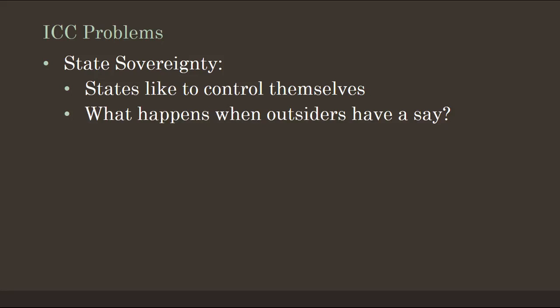State sovereignty is another issue. States like to control themselves — the concept of sovereignty means nations prefer to have their own laws and rules rather than having the international community dictate when killing is lawful or not. Whenever countries deal on the international level, questions arise about what it means when people from other societies try to have a say in your country. There are many in the United States, for example, who feel the United Nations is trying to tell America what to do.